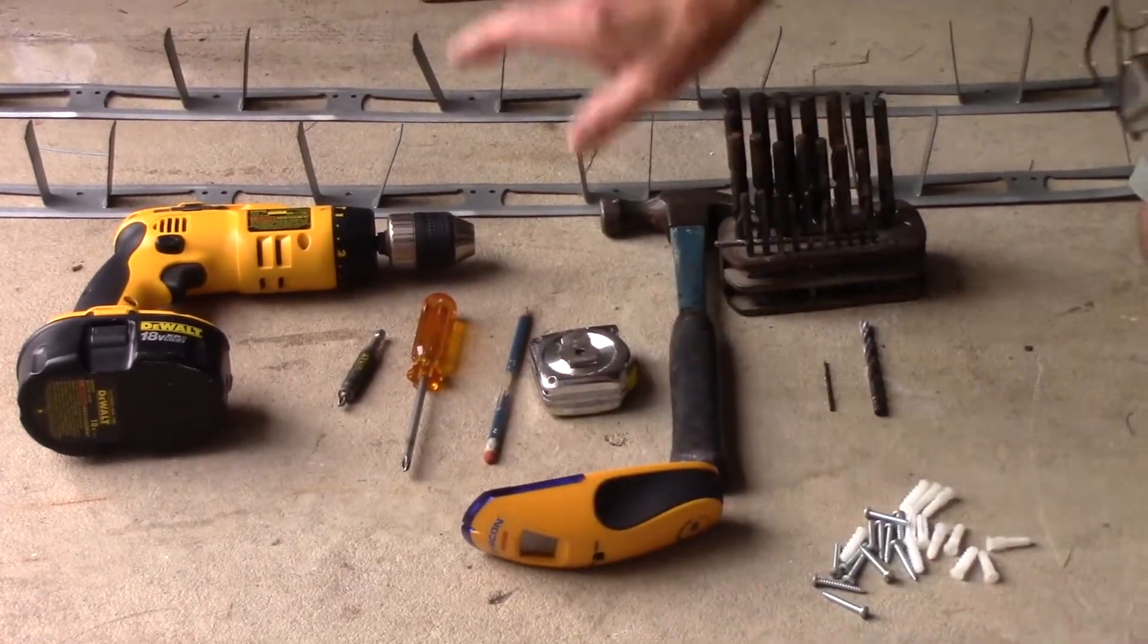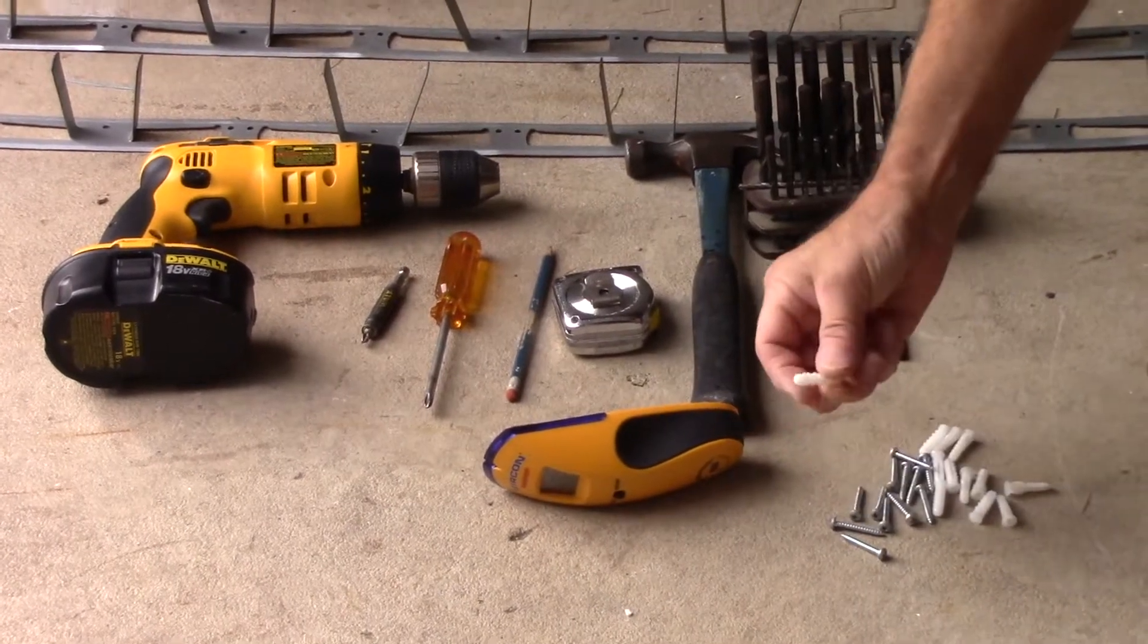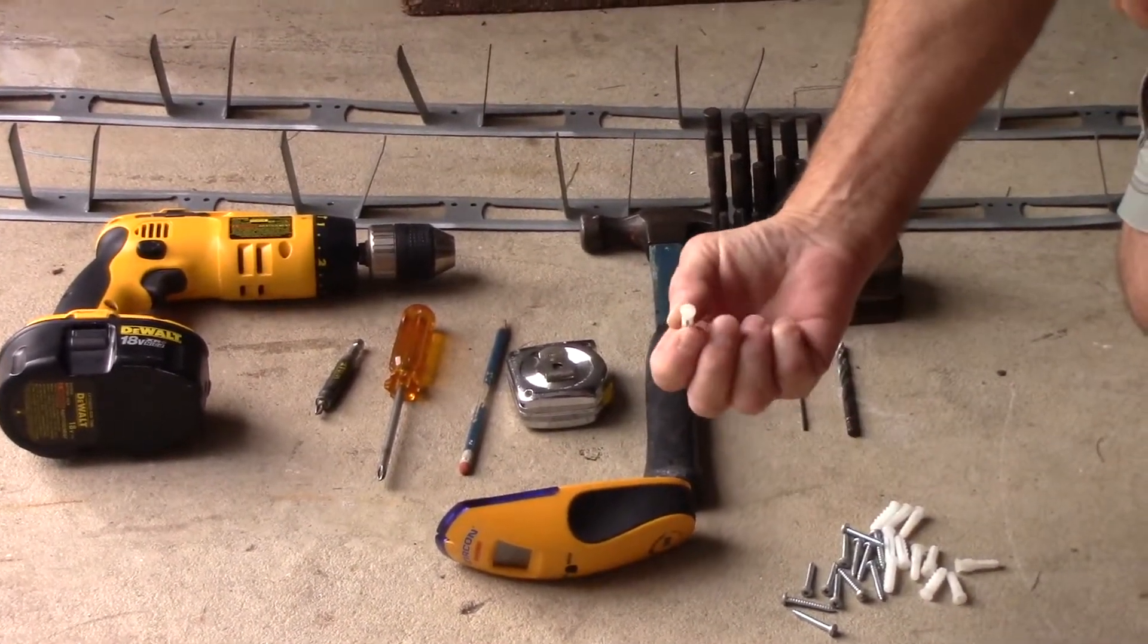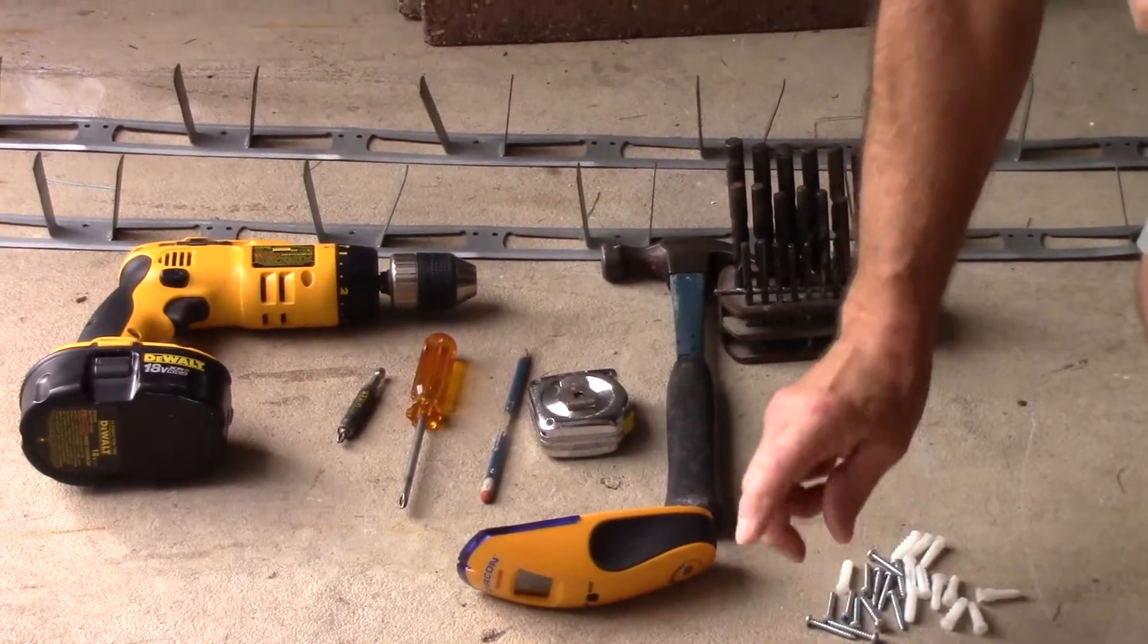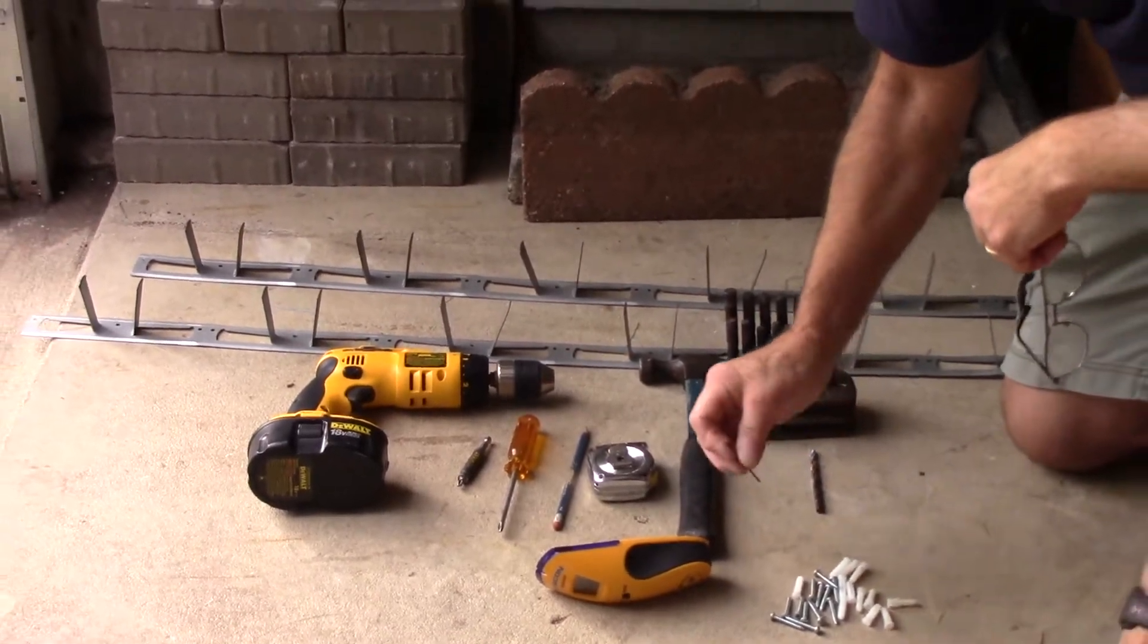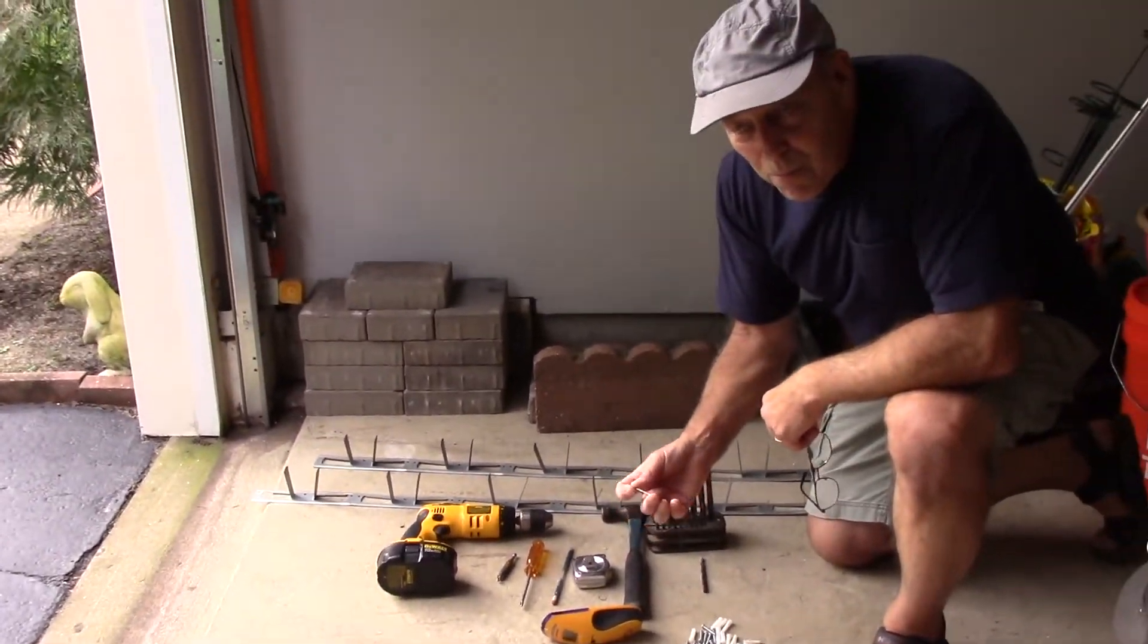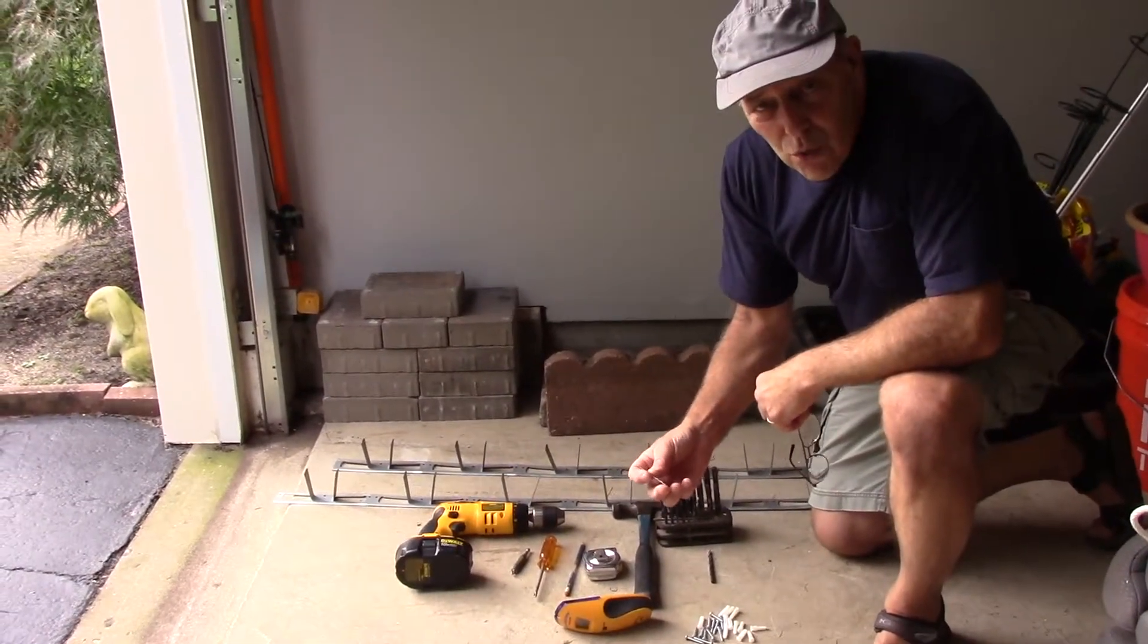A stud finder is good to locate the studs in the wall so that way when you try to put a molly in, if you're hitting a stud, you will not use a molly, you'll just use a screw. But I'm going to show you how to do it using the stud finder, and then I'm going to show you another way to do it without using the stud finder so that your holes are not too big in the wall and you won't be able to screw the screw in properly.